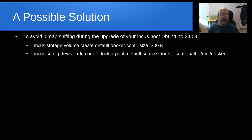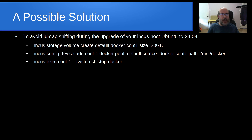Next, we want to do an incas config device add, specifying our container name as container-one. We'll call this device arbitrarily 'docker' — we can call it anything we want. The pool is going to be the default pool, the source is going to be docker-cont1 (the name of the storage volume we just created), and we give it a path of /mnt/docker. After that, I'm going to do an incas exec on container-one and run systemctl stop docker, because before any of this, we want to make sure that the Docker daemon is down.